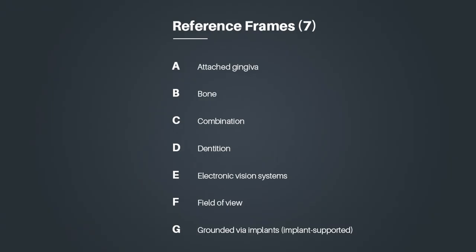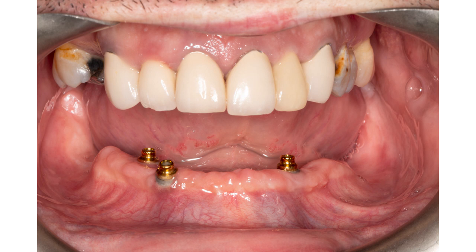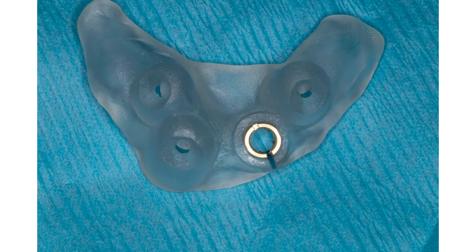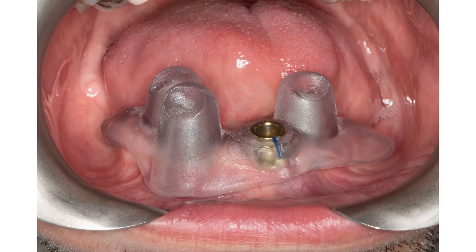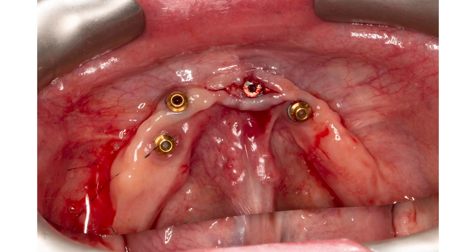Finally, type G stands for grounded via implants. If you already have integrated implants, you can use those as a foundation for your guide. These work really well because they are rigid. In this case, we attempted an all-on-four with locators, but one of the implants in the front didn't integrate. We made a guide with a type 4 constraint system and grounded it on the implants. To do this, we placed abutments on the implants, slipped the guide over them, and placed the new implant through the guide.